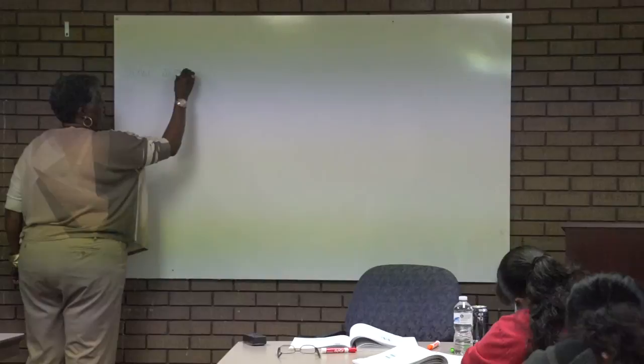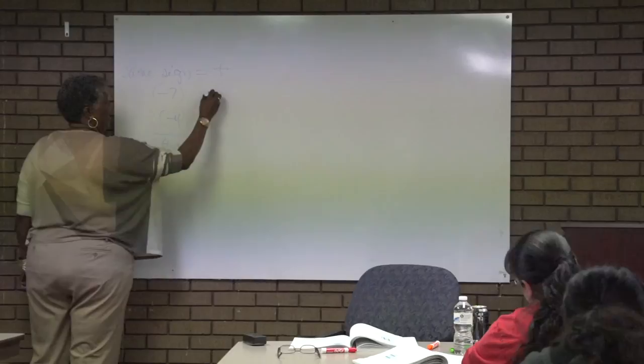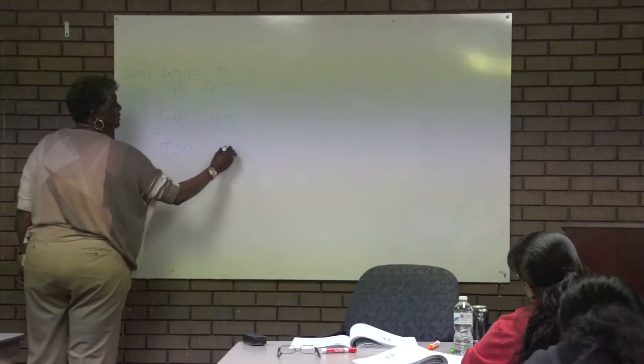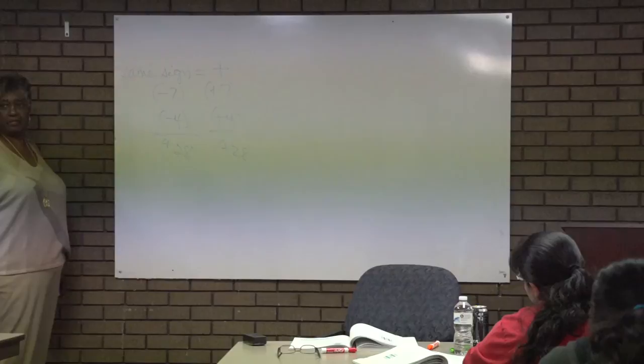If I have negative 7 times a negative 4, it's still a positive 28 — just like a positive 7 times a positive 4 is a positive 28. Negative times negative or positive times positive, the answer is still positive. It's always when you multiply. When the signs are the same, the answer is positive.